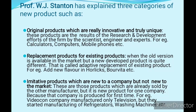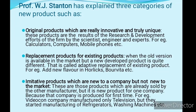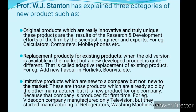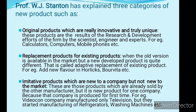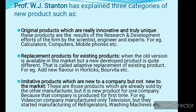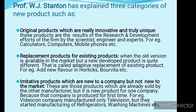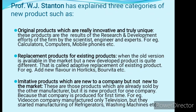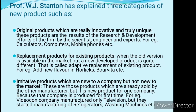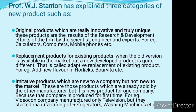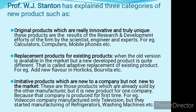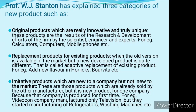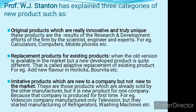The third category is imitative products, which are new to a company but not new to the market. These are products already being sold in the market by another company. For example, Videocon initially manufactured only televisions, then started manufacturing refrigerators and washing machines. When Videocon started manufacturing refrigerators, it was a new product for Videocon, but it was already available in the market from other companies. This is an example of an imitative product — new to the company but not new to the market.